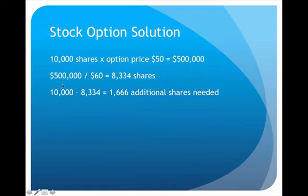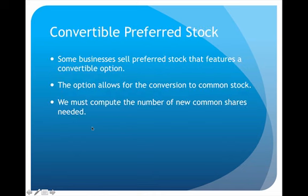With five hundred thousand dollars received and the stock currently selling for sixty dollars per share, we can buy back approximately eight thousand three hundred and thirty-four shares. Subtracting that from the ten thousand shares issued — ten thousand minus eight thousand three hundred and thirty-four — means we would need to come up with an additional one thousand six hundred and sixty-six shares. That is the treasury method calculation for stock options.